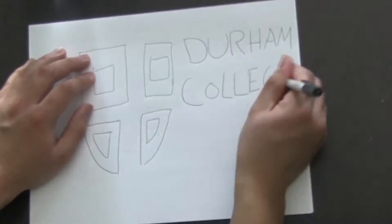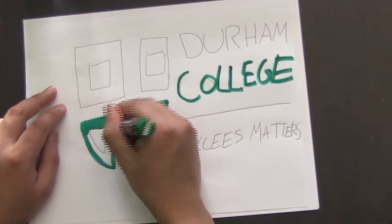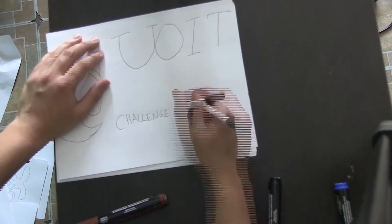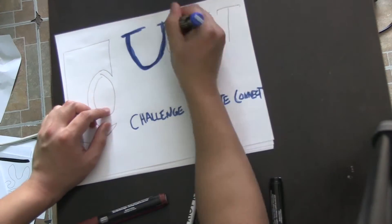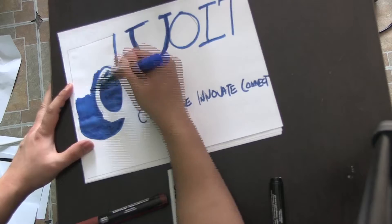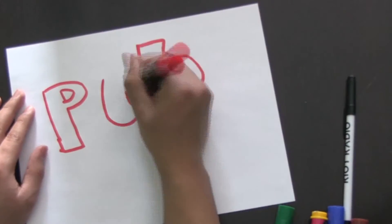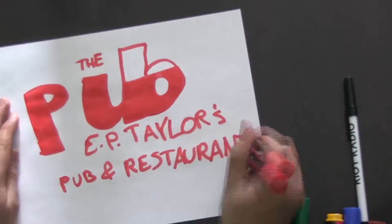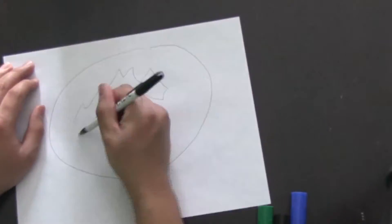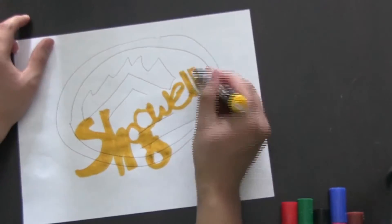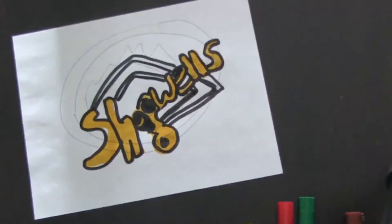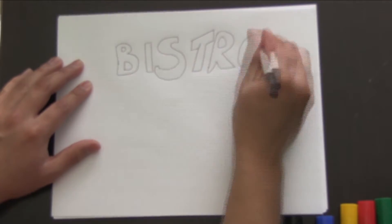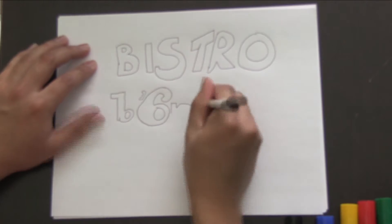Students at Durham College and UOIT usually go to E.P. Taylor's Pub & Restaurant, Shagwells on the Ridge at the Campus Life Center, and P-Store 67 at the Whitby Campus.